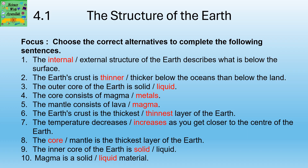The internal structure of the earth describes what is below the earth's surface. The earth's crust is thinner below the oceans than below the land. The outer core of the earth is liquid. The core consists of metals. The mantle consists of magma. The earth's crust is the thinnest layer of the earth.